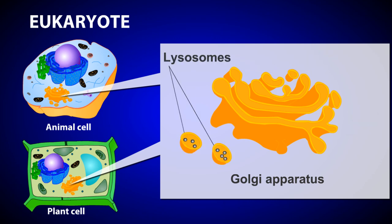Lysosomes, which are produced by the Golgi apparatus, are vesicles that aid in the breakdown of materials within the cell. They may also digest worn or damaged organelles and recycle their components.